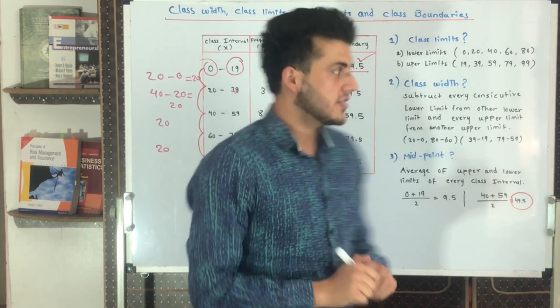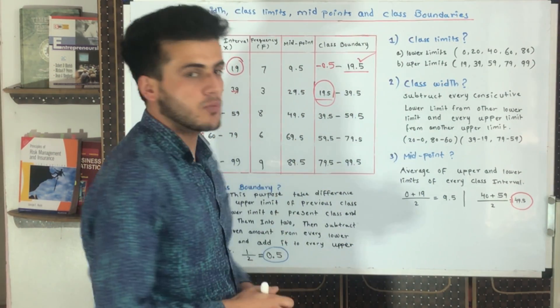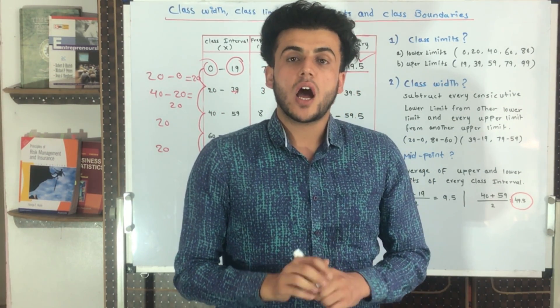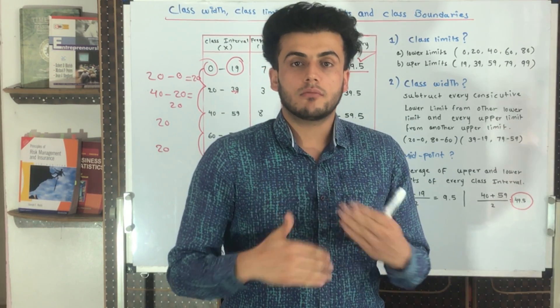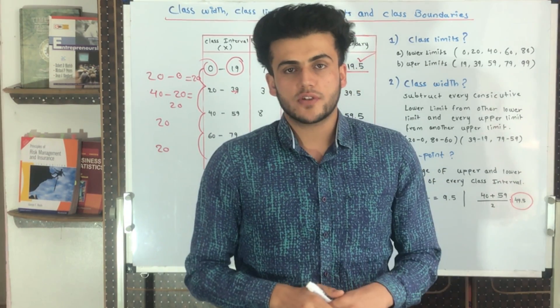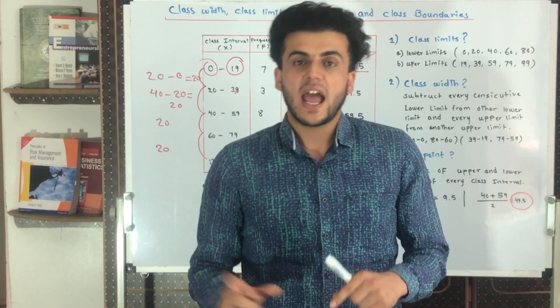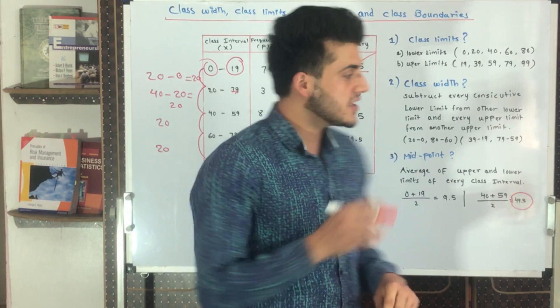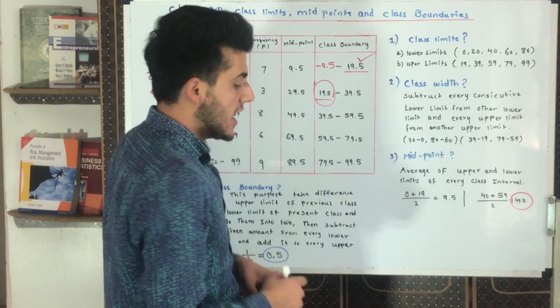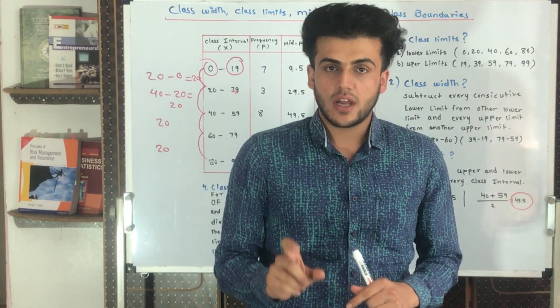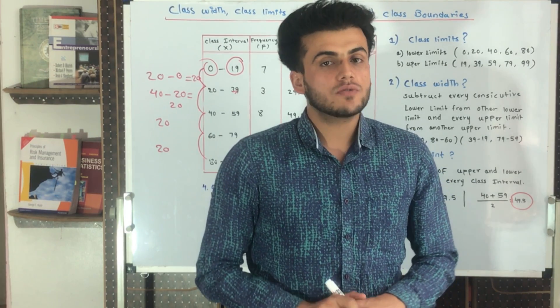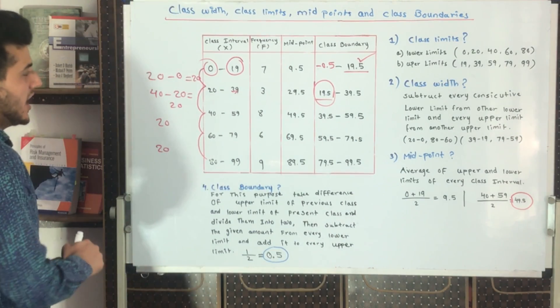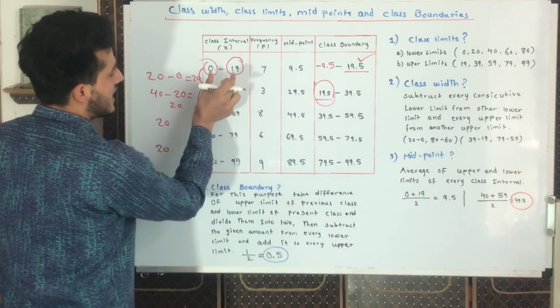The third point is midpoint. In previous lectures we studied how to convert midpoints into class intervals. We had midpoints and by using some methods we were able to find the class intervals. But here the situation is different - the class interval has been given to us and we are finding the midpoint.